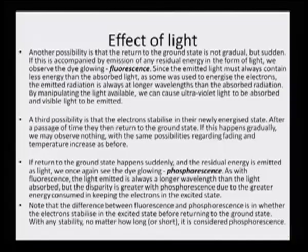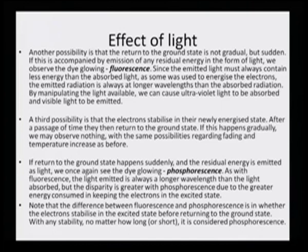Another possibility is that the return to the ground state is not gradual but sudden. If it is accompanied by emission of any residual energy in the form of light, we observe the dye to glow — that causes fluorescence. Since the emitted light must always contain less energy than the absorbed light, as some was used to energize the electrons, the emitted radiation is always at longer wavelengths than the absorbed radiation. By manipulating the light available, we can cause ultraviolet light to be absorbed and visible light to be emitted.